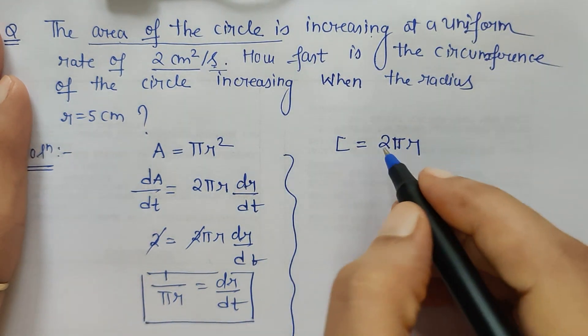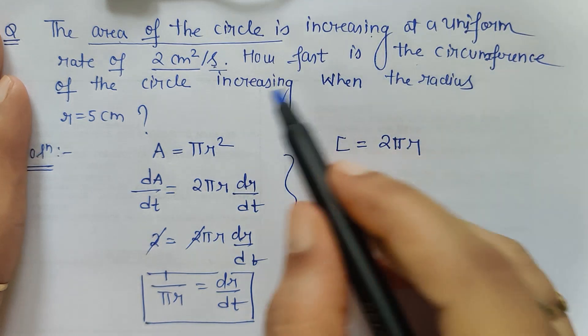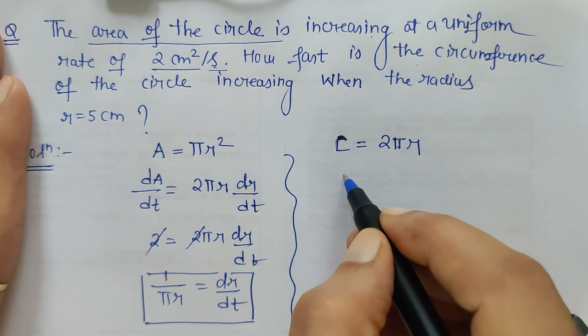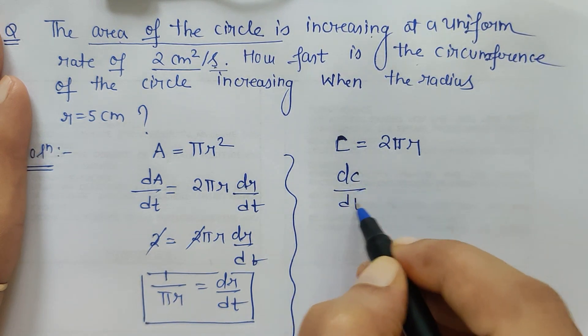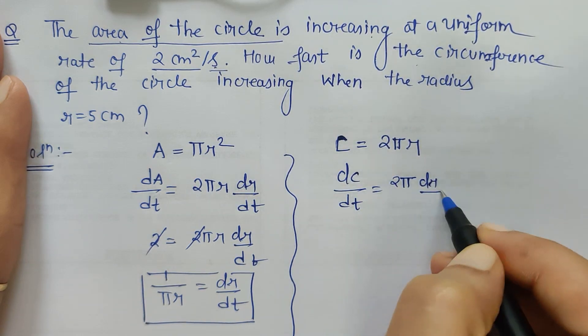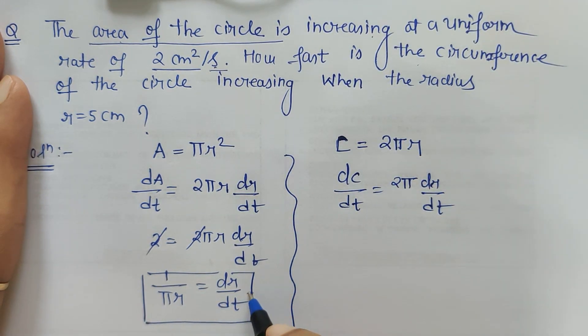Now next, how fast is the circumference of the circle increasing? That means again we have to check for dc/dt. If I differentiate I get dc/dt = 2π dr/dt. Now this value will be used here which was just obtained.